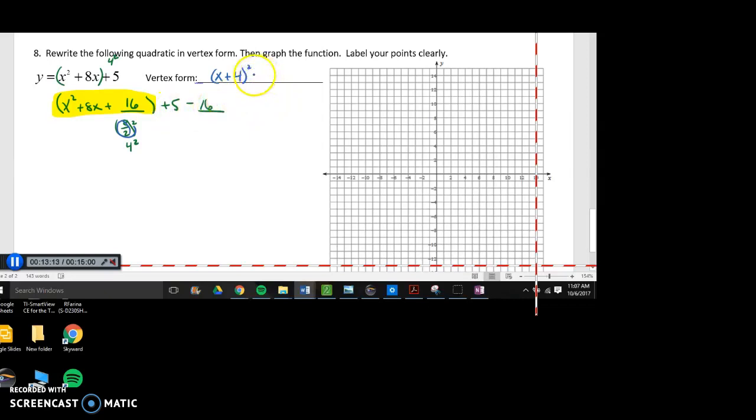Then, 5 minus 16 is minus 11. So, in order to graph, first thing we do, find the vertex, which is that opposite of 4 is negative 4, negative 11. Negative 4, negative 11, right here. 1, 2, 3, oops, sorry, it's right here. Excuse me.